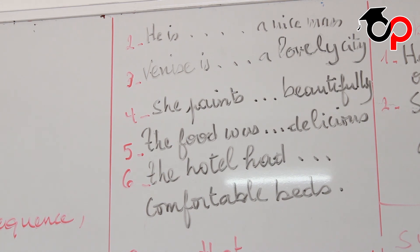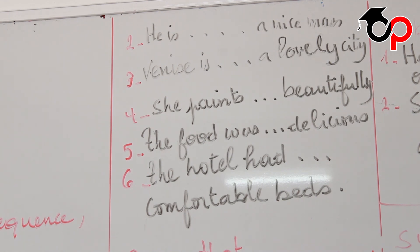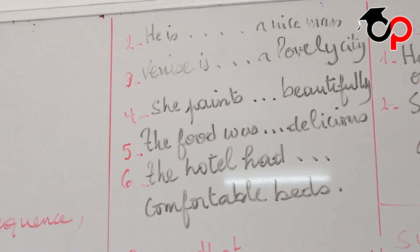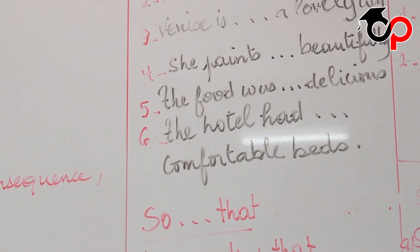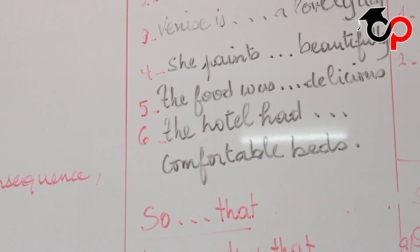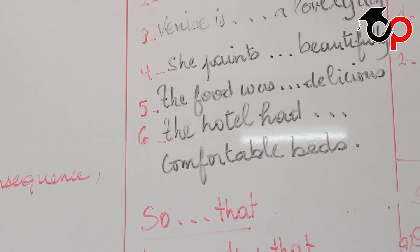Venice is really such a lovely city. Four: she paints beautifully — beautifully is an adverb, so we put so: she paints so beautifully. Five: the food was delicious — delicious is an adjective, so we put so: the food was so delicious. Six: the hotel had comfortable beds — comfortable beds is a noun phrase, comfortable is an adjective, so we use such.